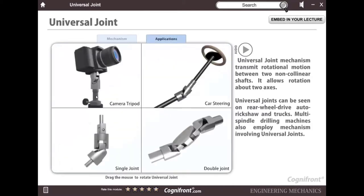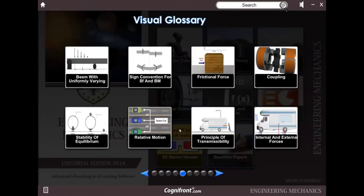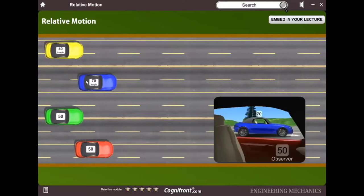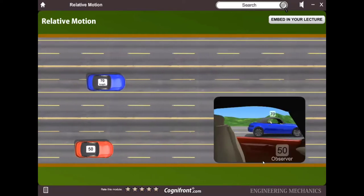These are the applications such as camera tripod, car steering, single joint, double joint. So let's see relative motion now. The observer has a speed of 50 km per hour. And if I opt for the car with 70 km per hour, what will be visible to the observer is shown.